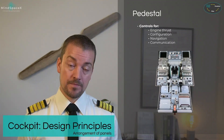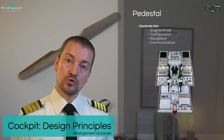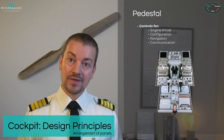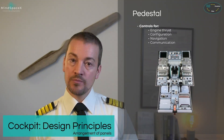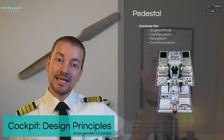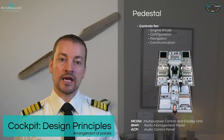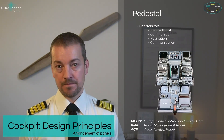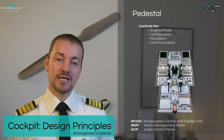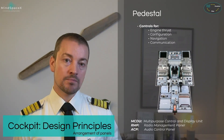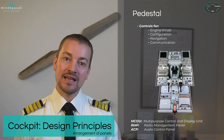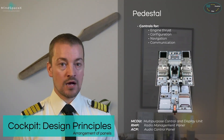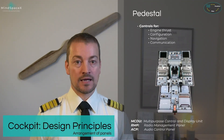And then we have the pedestal. The pedestal between the two pilots is used for engine thrust control, configuration changes, navigation, as well as communication. Up in the left and right-hand corner here, you have the MCDU — the Multipurpose Control and Display Unit. The MCDU is an interface unit that allows the pilots to input data into the flight management and guidance system, as well as retrieve information such as performance, flight plan, et cetera.